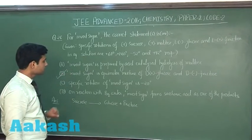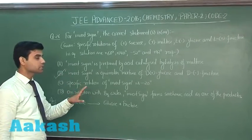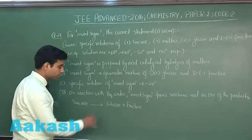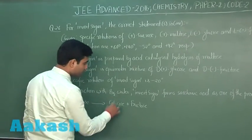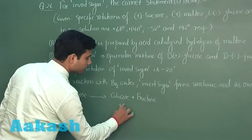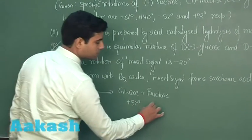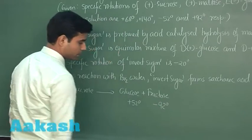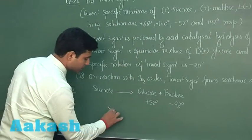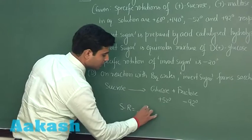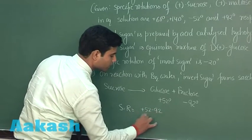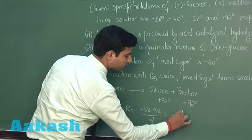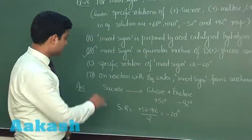Option C states that the specific rotation of invert sugar is −20°. Let us calculate: glucose has a rotation of +52° and fructose has a rotation of −92°. So the specific rotation equals (+52 − 92) ÷ 2 = −20°. So this is also a correct answer.